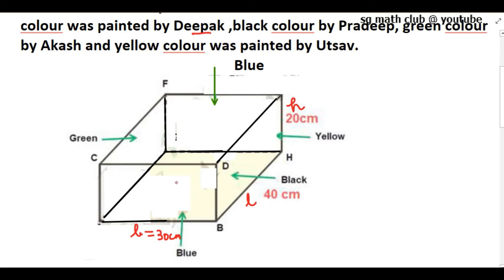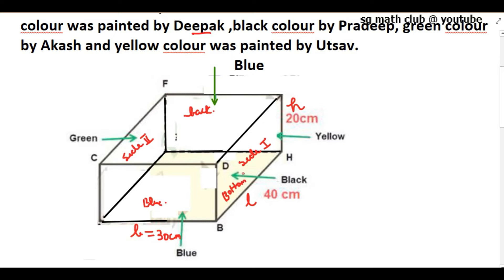The front portion and the back portion are painted with blue color. The side painted with yellow color — if I name this as side 1 and this as side 2 — side 2 is painted with green color and side 1 is painted with yellow color. The front and back portions are painted with blue color, and the bottom is painted with black color.